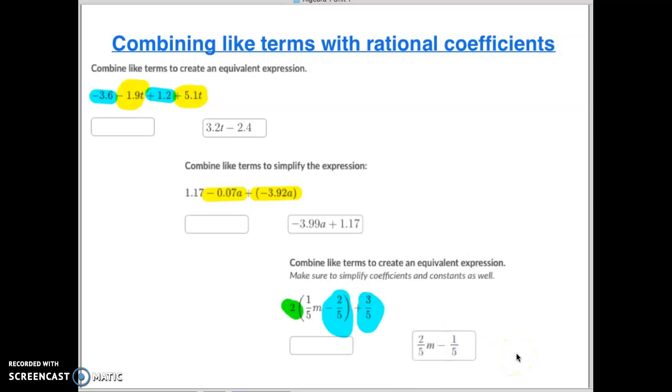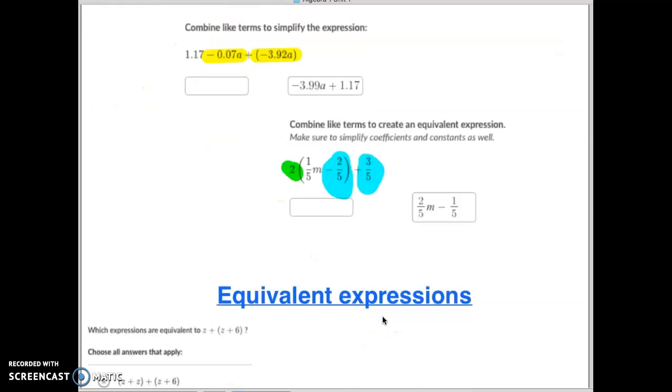Add those together and you have more negatives than positives by 1/5. So it'd be 2/5m, and then the negative 4/5 and the positive 3/5 results in negative 1/5. Hopefully that answers questions for this one. Let's quickly move on to equivalent expressions.